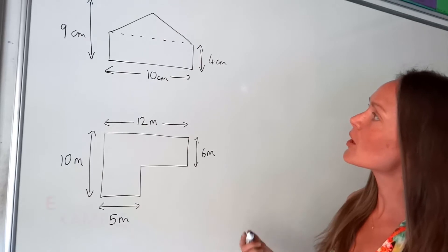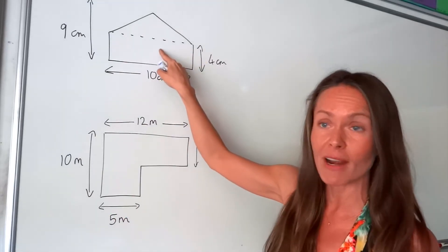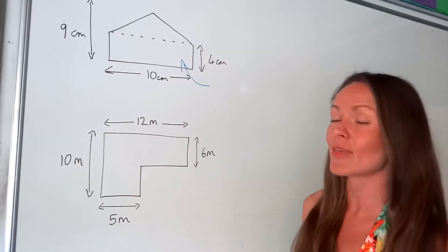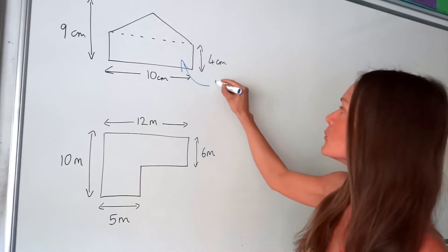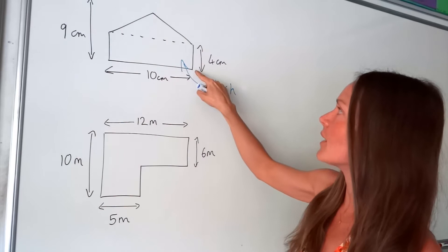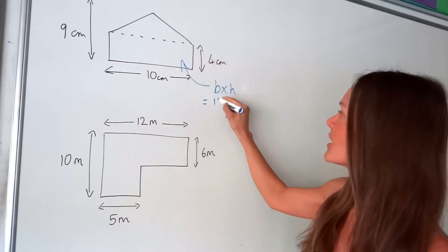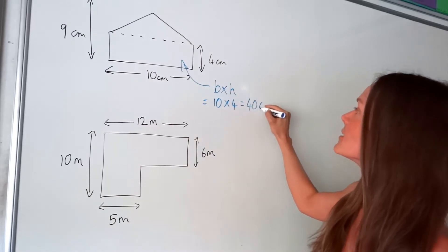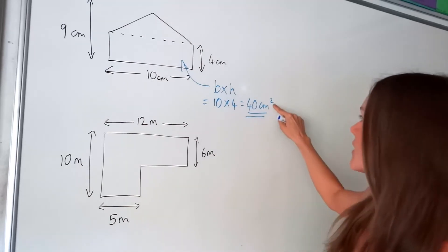So to work this one out, I'm going to first of all work out the area of the rectangle here. Hopefully you already know how to work out the area of a rectangle — it's base times height. So the base here is 10 and the height of this rectangle is 4. So it's just 10 times 4 for the rectangle, which is 40 centimetres squared. Remember, the units are always squared for area.